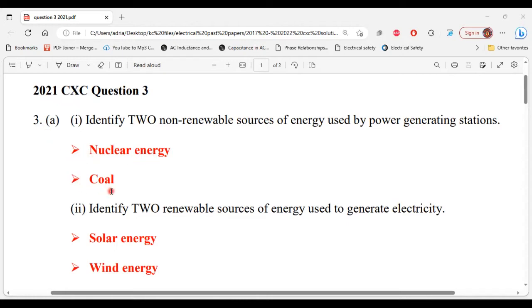All right, so the first one: nuclear energy, and the second one is coal. So those are the two non-renewable resources.